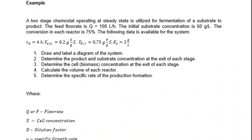Firstly, we are asked to draw and label a diagram representing the entire system. We are also asked to determine the substrate concentration at the exit of each stage, the cell or biomass concentration at the exit of each stage, the volume of each reactor, and the specific rate of product formation.